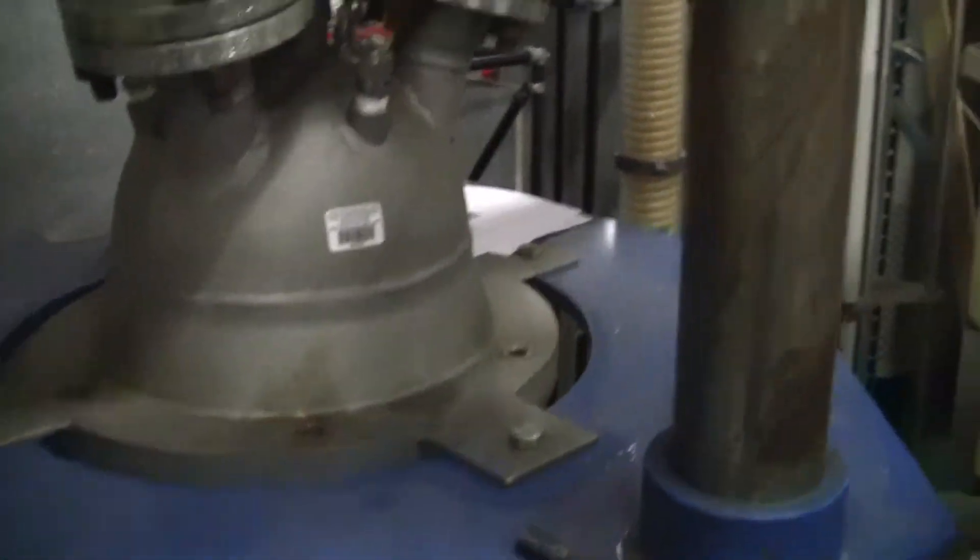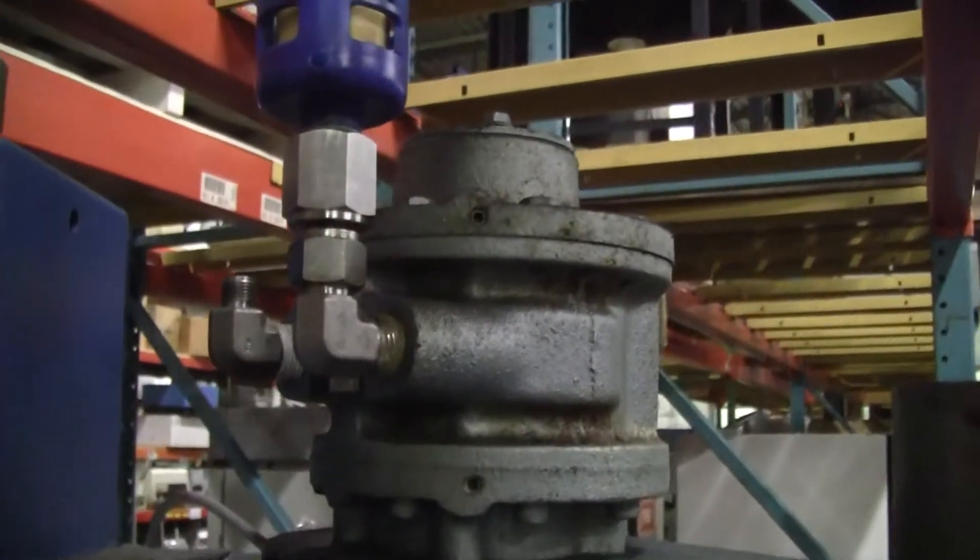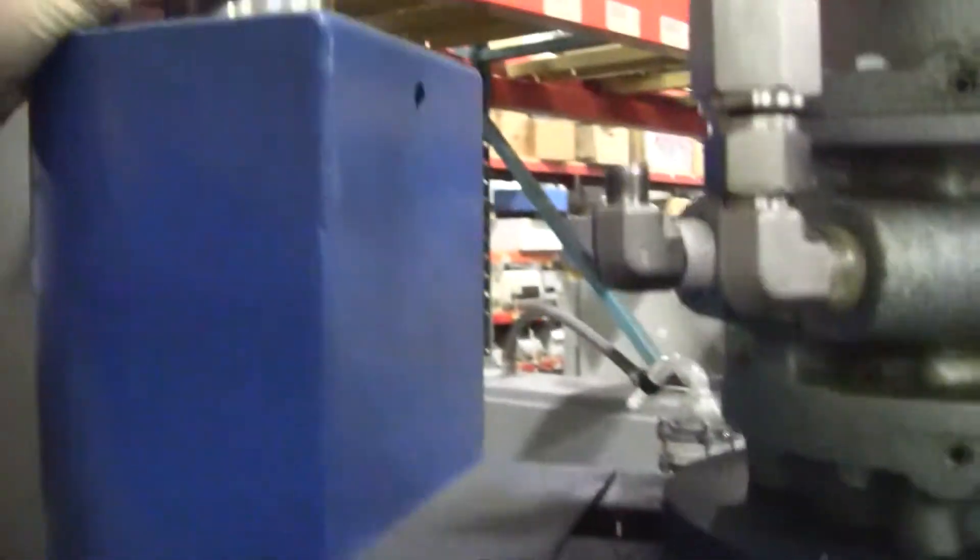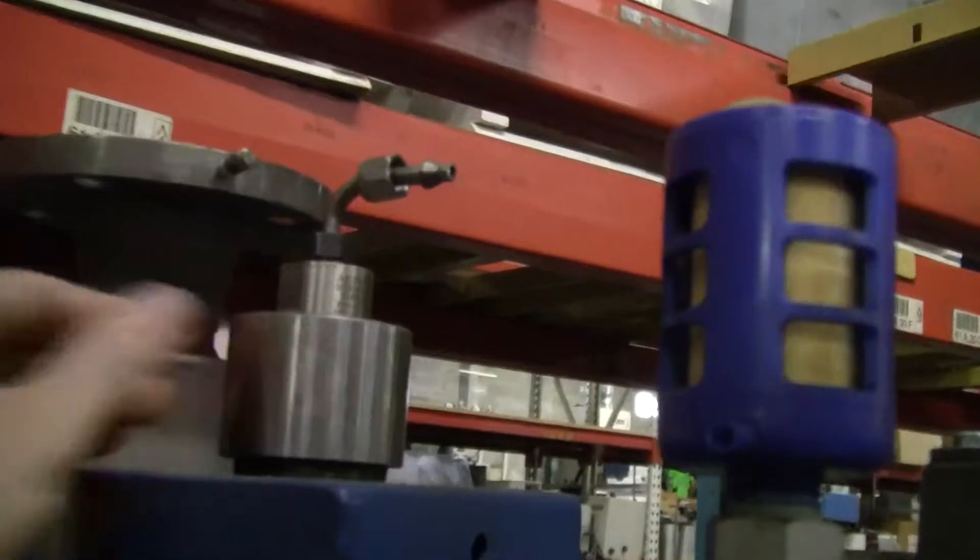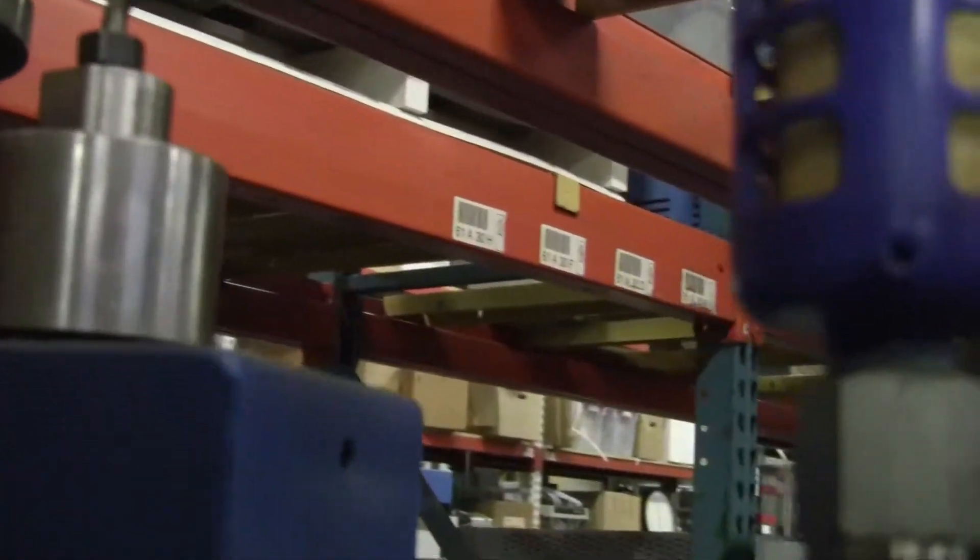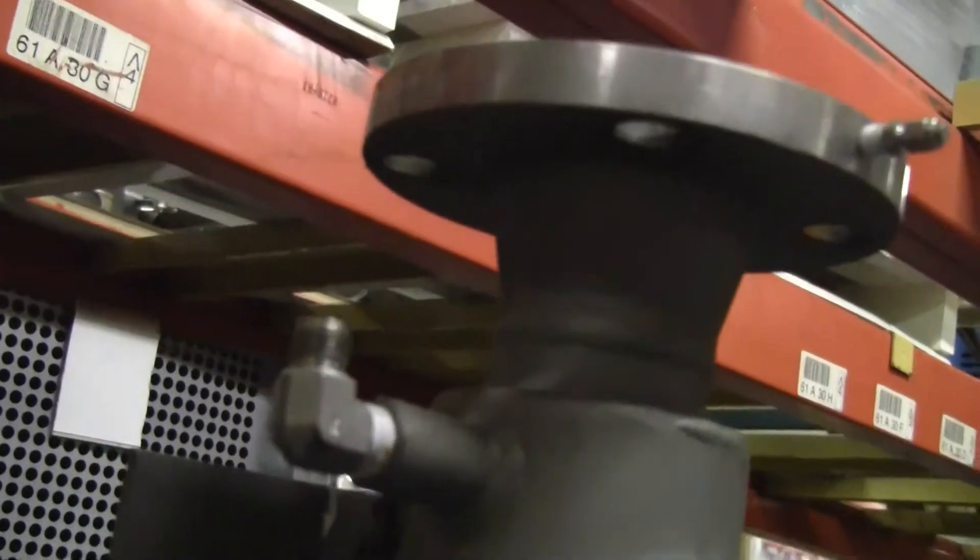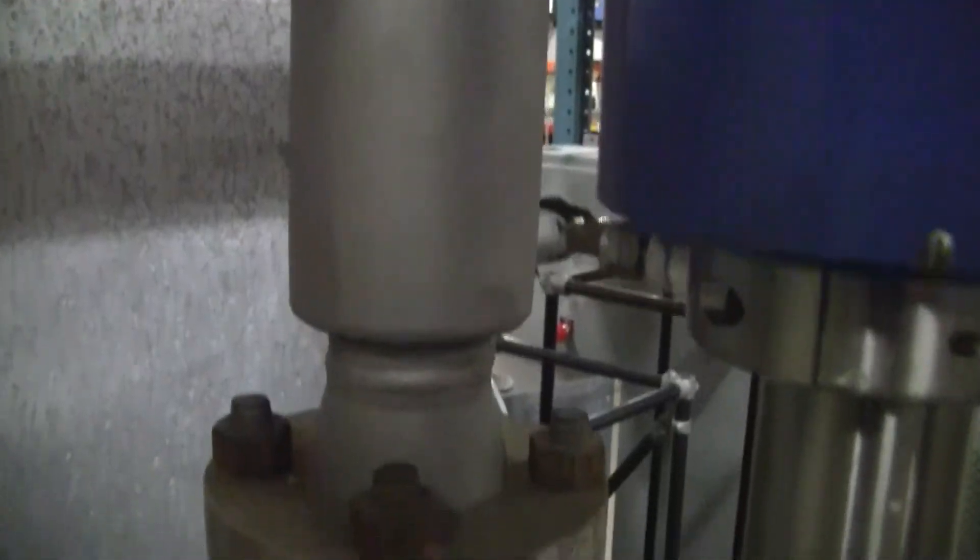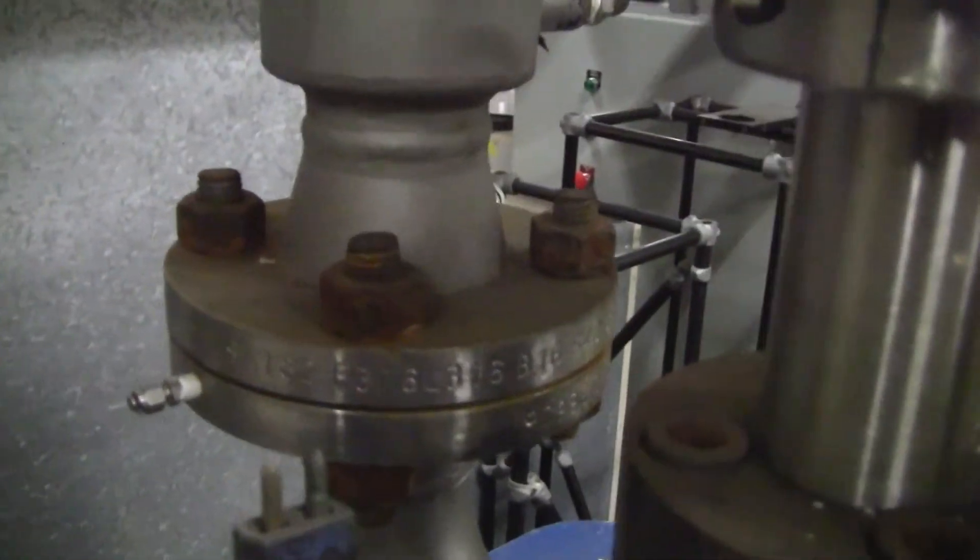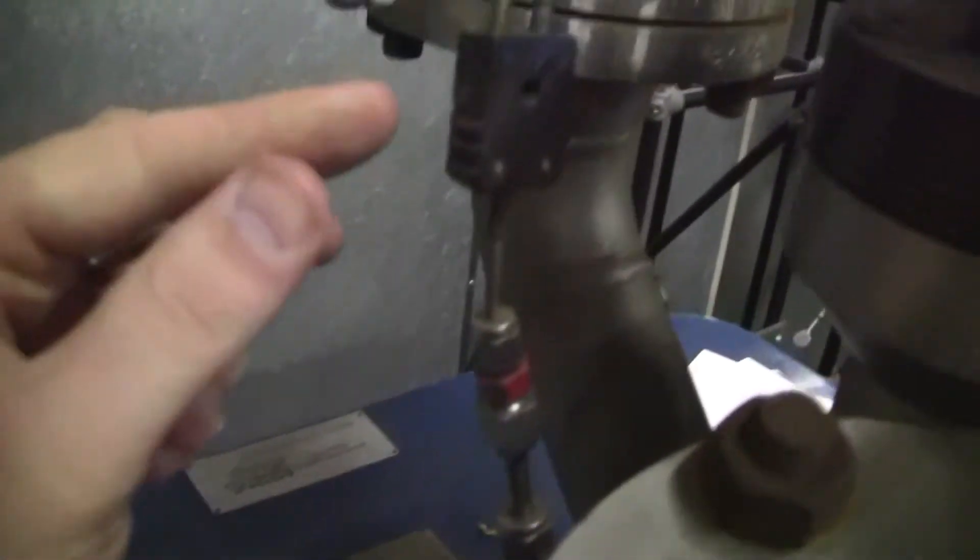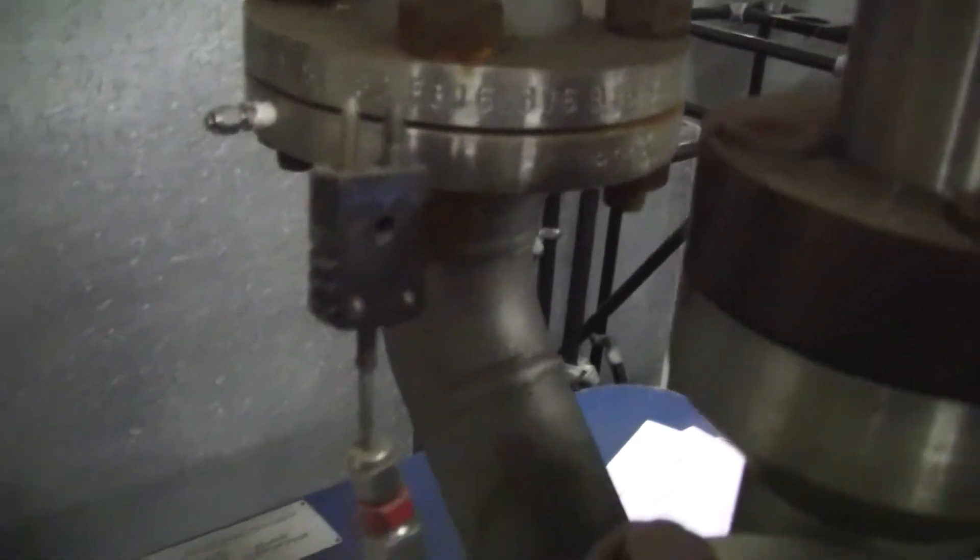We'll take a look at the top of the unit first. You have your arm here holding up your air drive motor, top of the head, moving down, J-type thermocouple port.